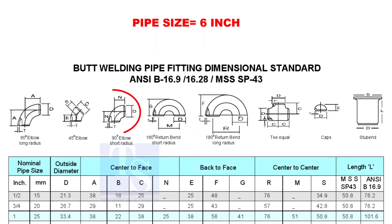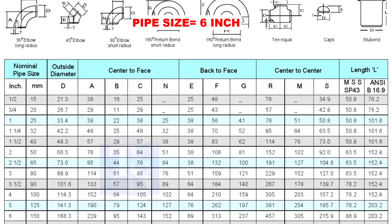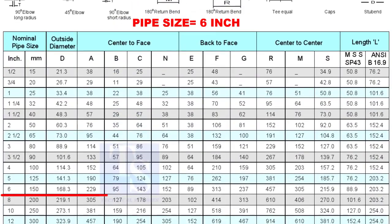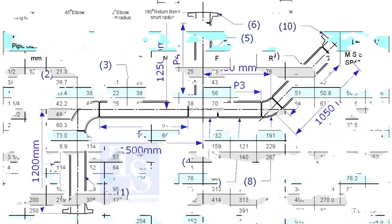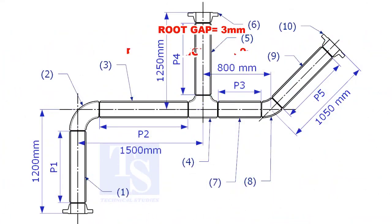Check the takeoff length of the elbow. It is 229mm. Assume the root gap is 3mm.